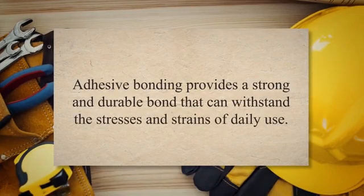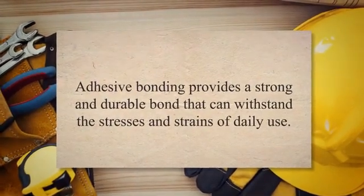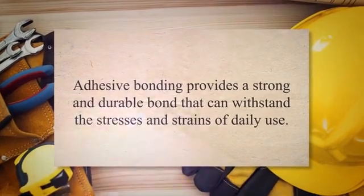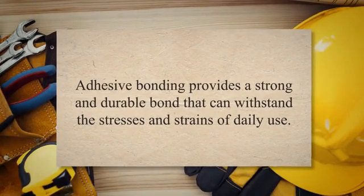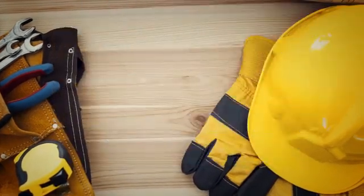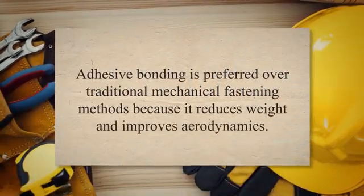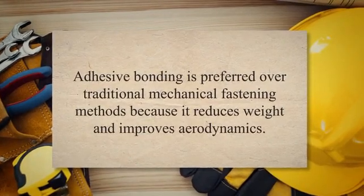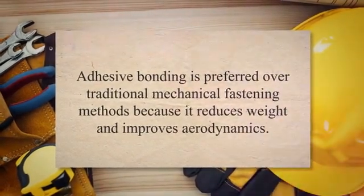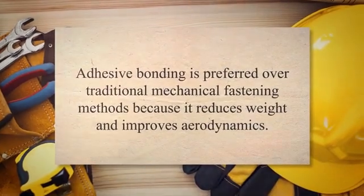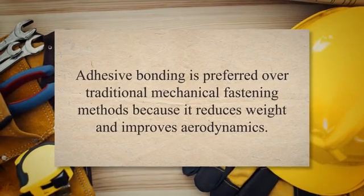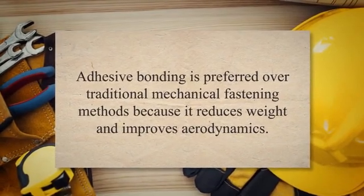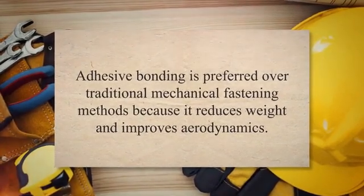In the automotive industry, adhesive bonding is used to join different parts of a vehicle, such as body panels, windshields, and interior components, providing a strong and durable bond that can withstand the stresses of daily use. In the aerospace industry, adhesive bonding is used to join composite materials, which are lightweight and strong, as well as metal components such as engine parts and structural elements. It is preferred over traditional mechanical fastening methods because it reduces weight and improves aerodynamics.